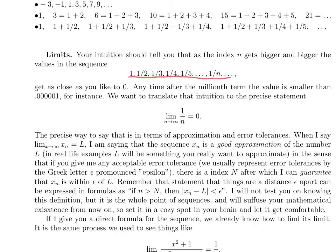Limits of sequences: if you have a sequence like this one—1, 1/2, 1/3, 1/4, 1/5, and so on—it's pretty clear that as the index gets bigger, as you go far enough out in that sequence, the numbers get very, very small, as close as you'd like to zero. After like the millionth term, anywhere after the millionth term, the numbers are smaller than 1/1000000.